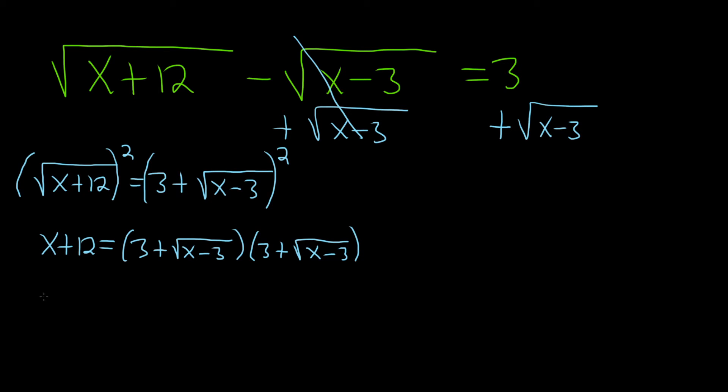Let's bring this down. x plus 12 equals, and now we'll multiply this out using FOIL. We take the 3 and multiply it by both terms, then take the square root and multiply it by both. First, 3 times 3 is 9. Outer, 3 times the square root of x minus 3.